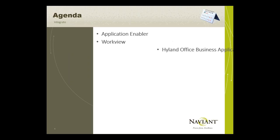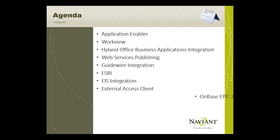Without further ado, let's get started on Integrate. The modules we're going to look at today include App Enabler, WorkView, the Office Business Apps integration (OBA), Web Services Publishing — which is a new module — Guidewire integration for insurance companies, Esri (the latest version of ArcGIS), geolocation services, the EIS integration in BizTalk, the external access client, and the Epic integration improvements.